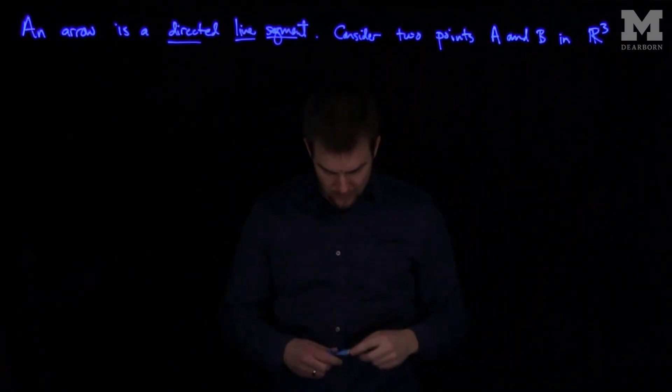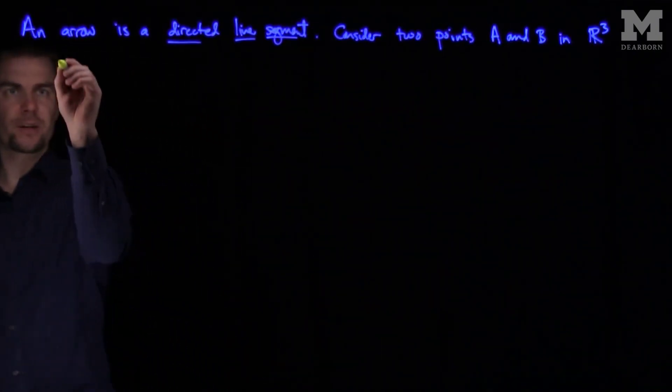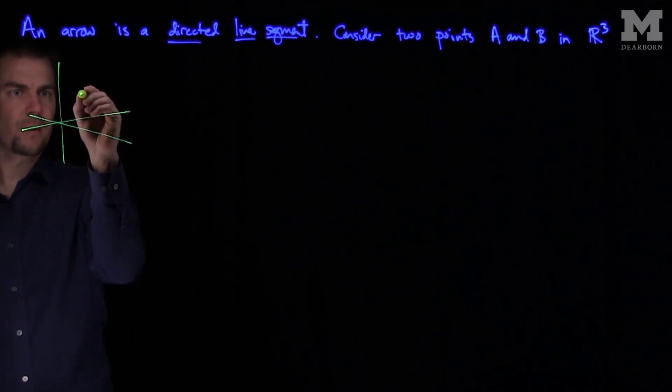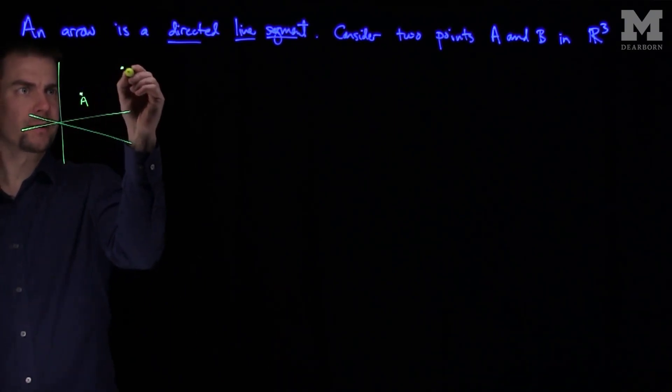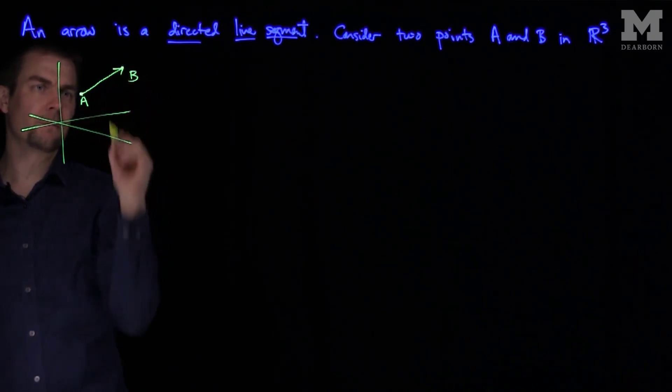And what we'll do with these points is plot them in three-dimensional space. So we can imagine our three-dimensional Euclidean space. Here's my point A. Here's my point B. And all an arrow is, is a line segment that goes from point A to point B.